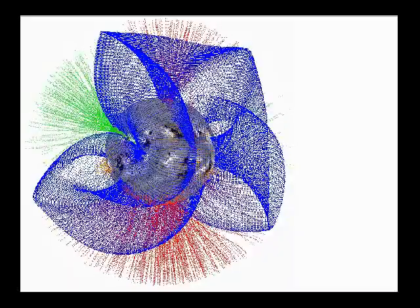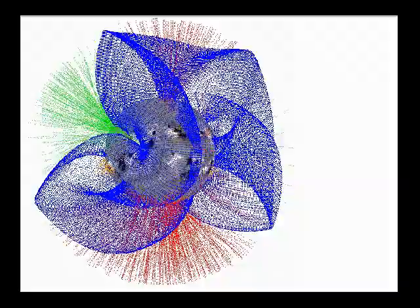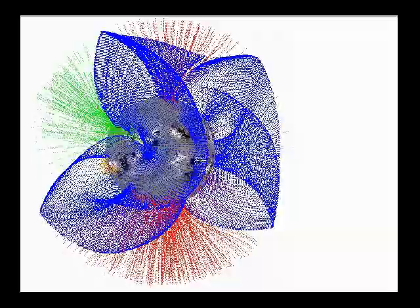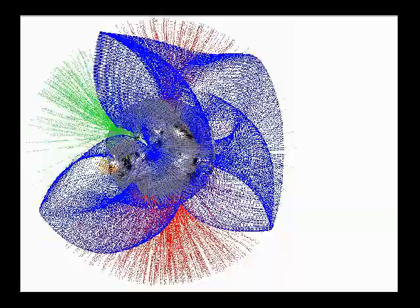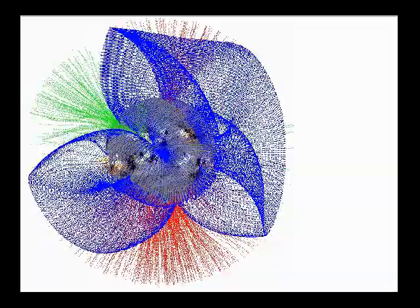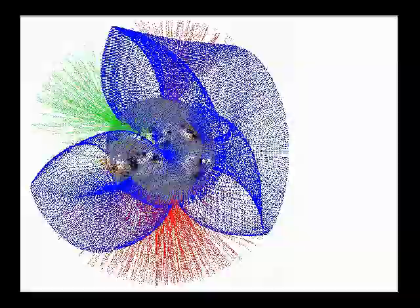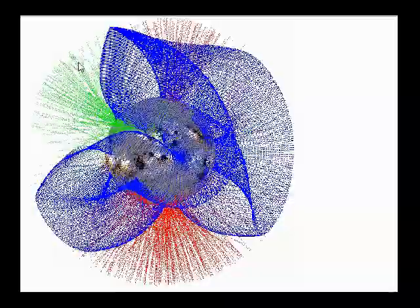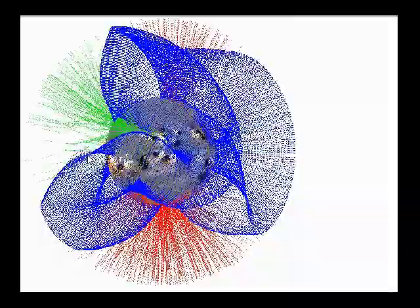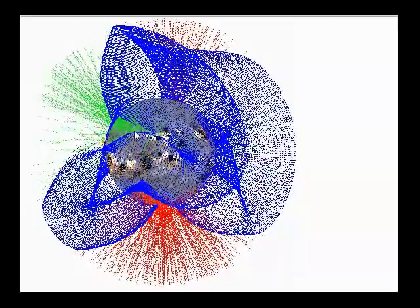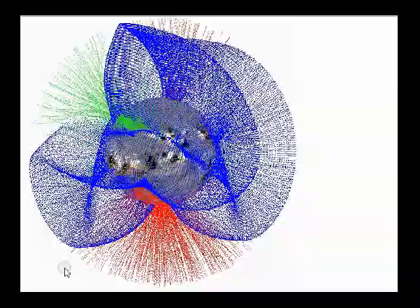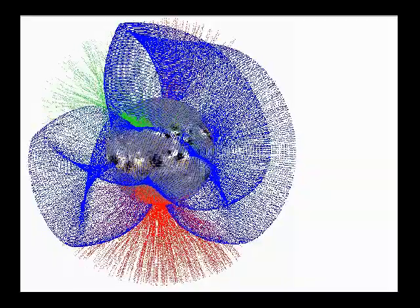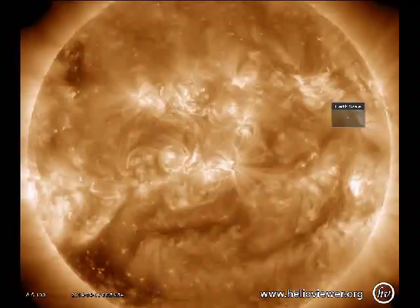But anyhow, it's just a heads up. There's nothing to be afraid of or anything like that. It's just something to keep an eye on, and you'll see the connection between these coronal holes and earthquakes. There's also a connection between the CMEs and flares and stuff and earthquakes too. The sun affects our planet in so many ways.